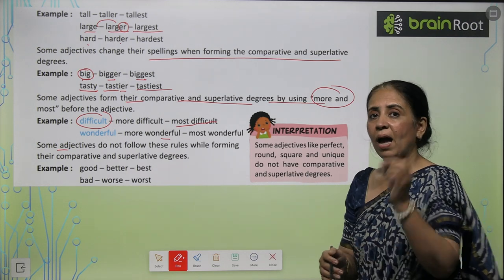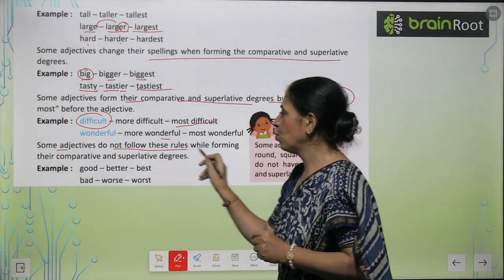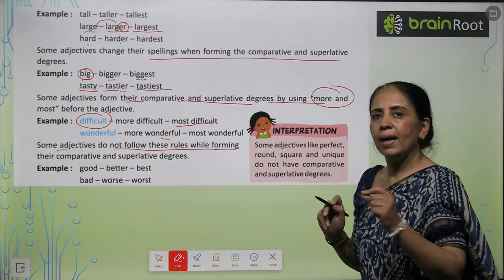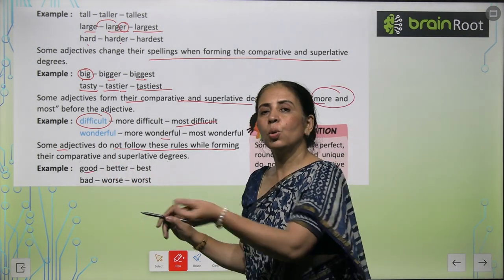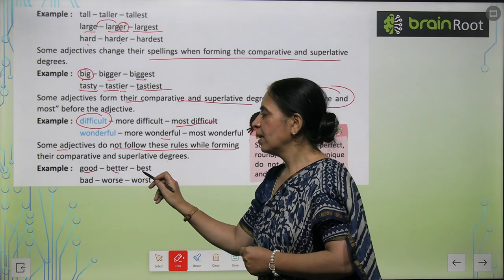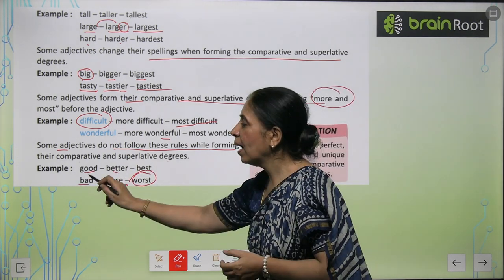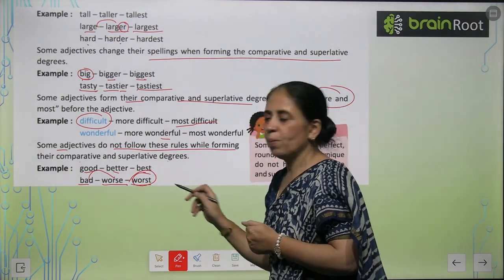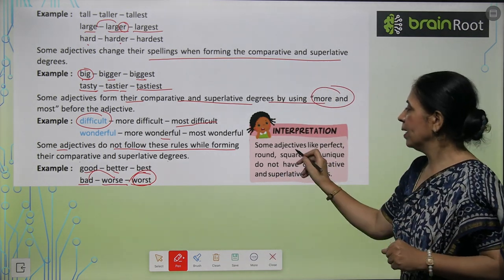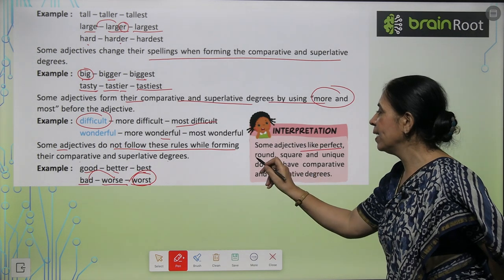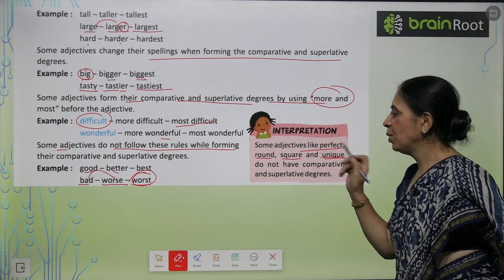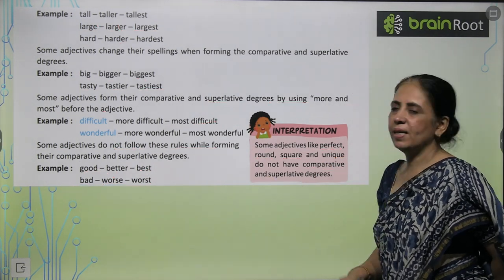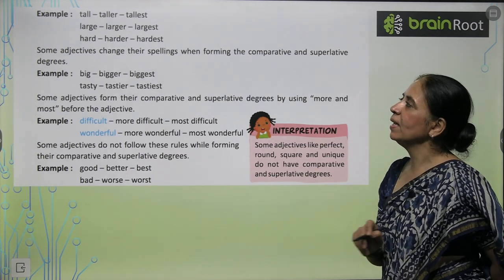Some adjectives do not follow these rules while forming their comparative and superlative degree. For example, 'good' becomes 'better' and 'best.' 'Bad' becomes 'worse' and 'worst.' Also, very importantly, some adjectives like 'round,' 'square,' and 'unique' do not have comparative and superlative degrees at all.